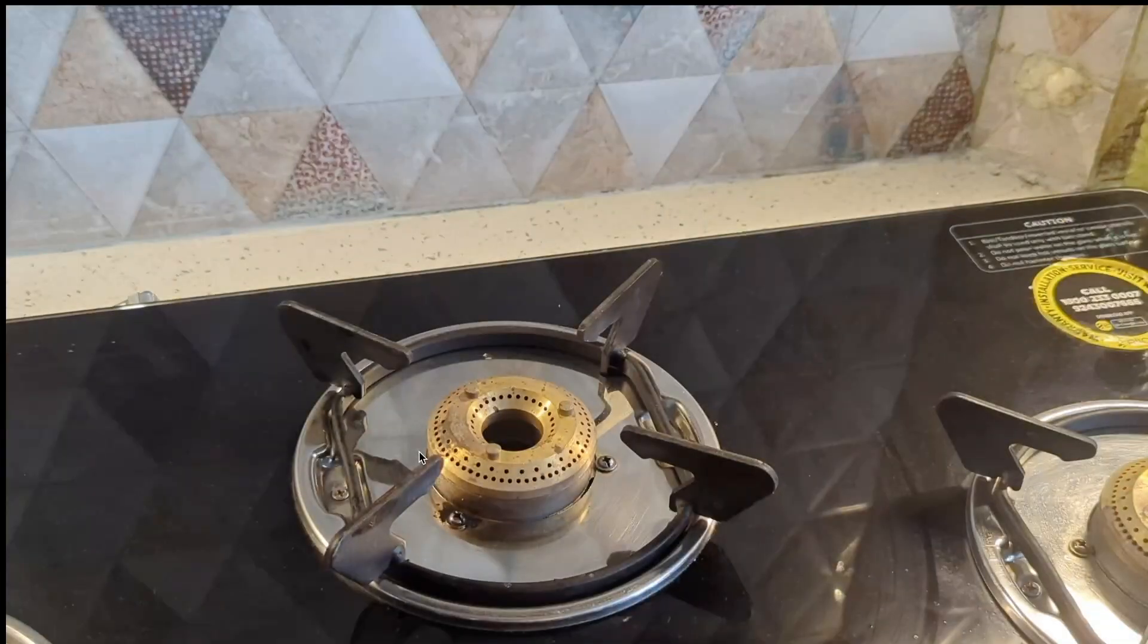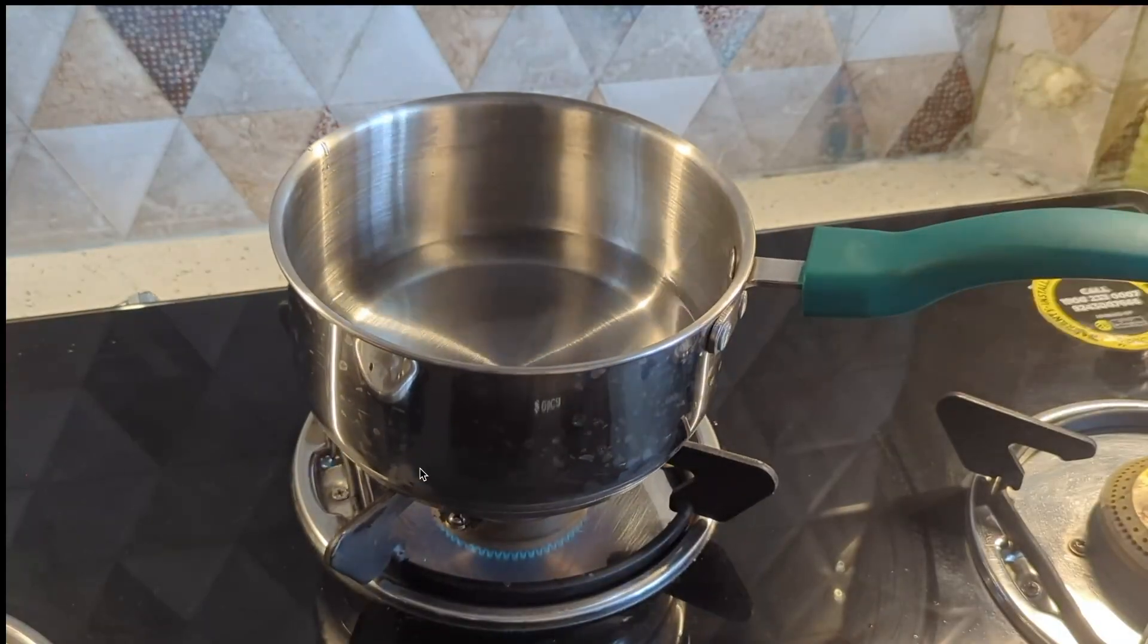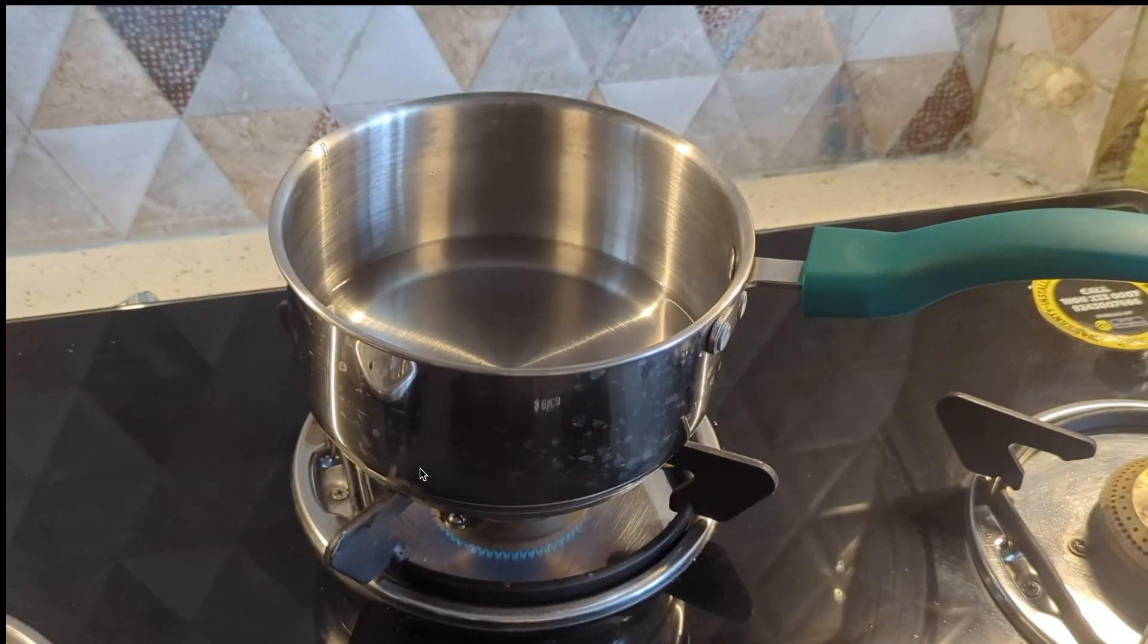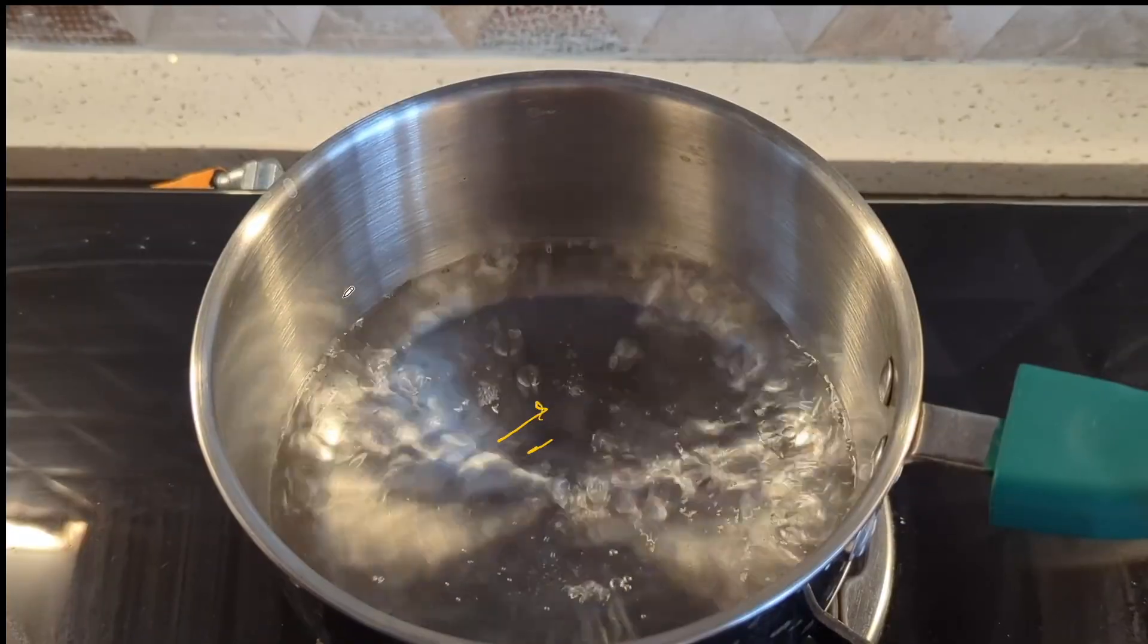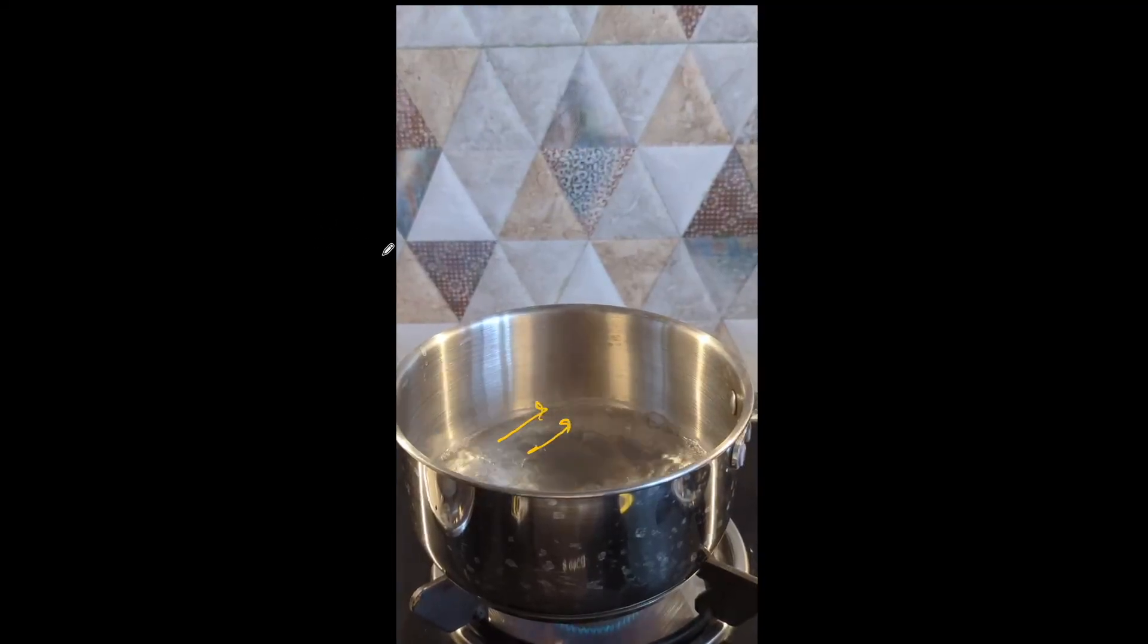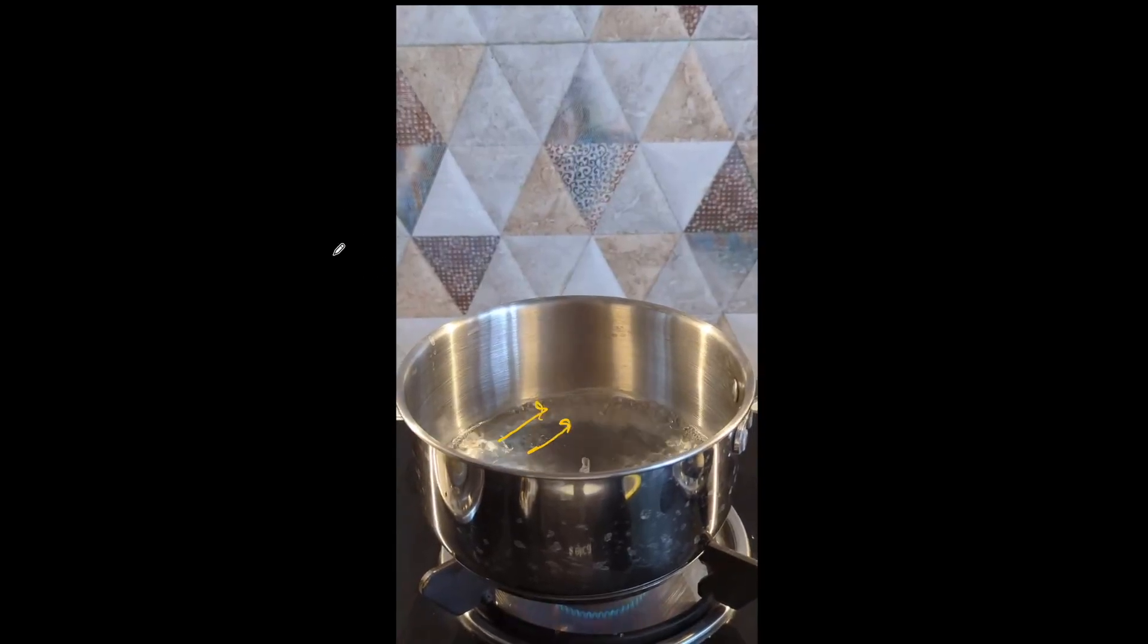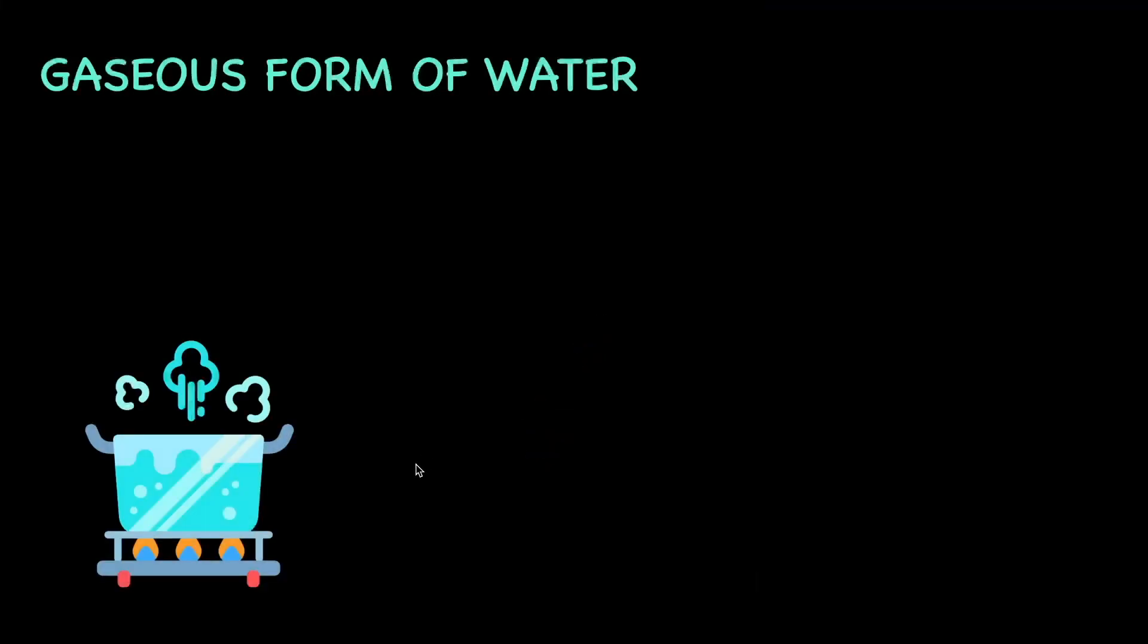Now let's go to the final form, which is the gaseous form. And for this, when we are carrying out this experiment, please, if you do want to try this out, do this with parental advisory. So now here, I have kept a little bit of water on the stove. And as you notice, it starts to boil. Eventually, you notice that these fumes start to come out. Now these fumes that we see is nothing but steam or what we commonly call steam.